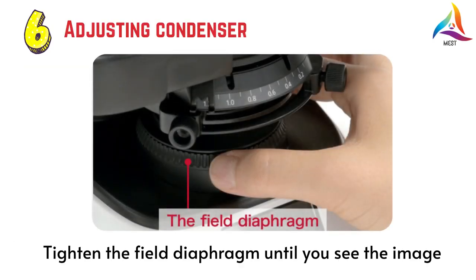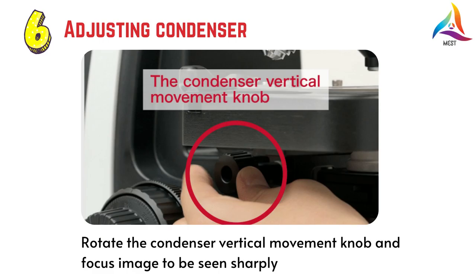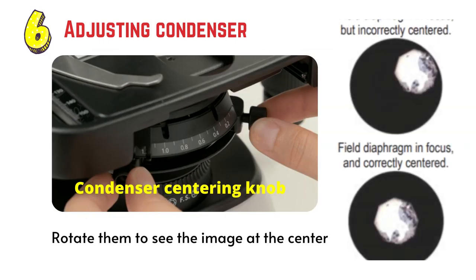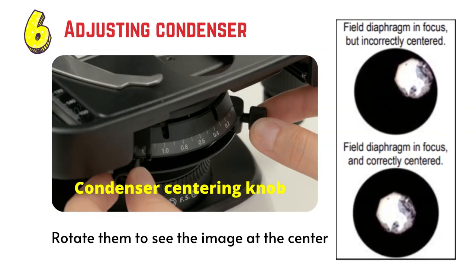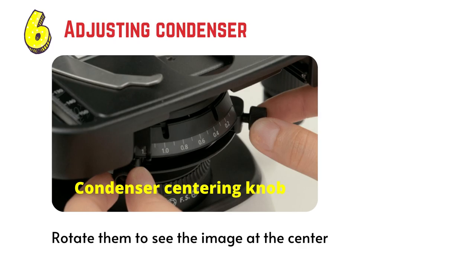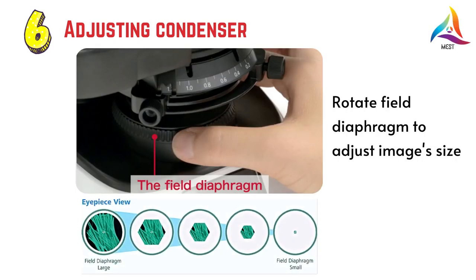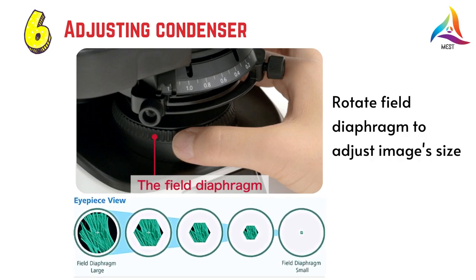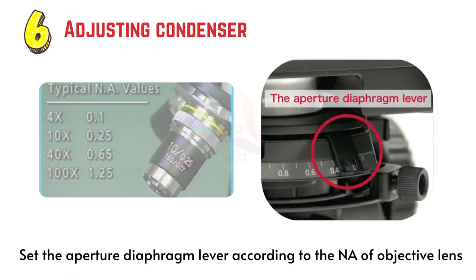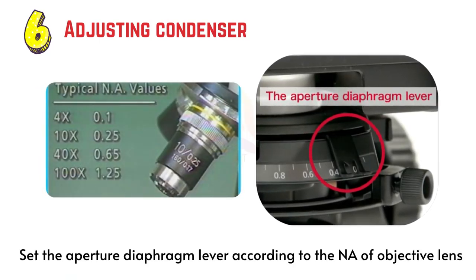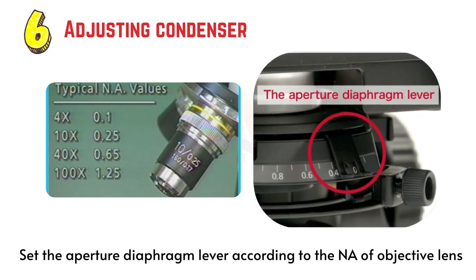Rotate the condenser vertical movement knob, and then focus the image to be seen clearly. Rotate the condenser centering knob until the image can be seen at the center of the viewing area. Rotate the field diaphragm to adjust the size of the image. Set the aperture diaphragm lever according to the NA of the objective lens.